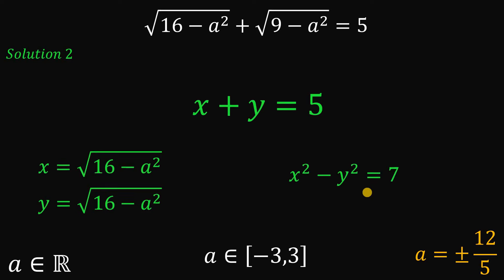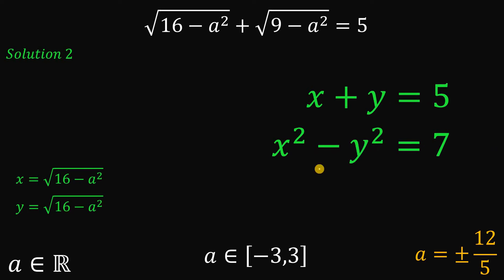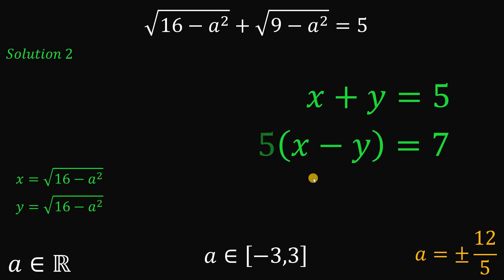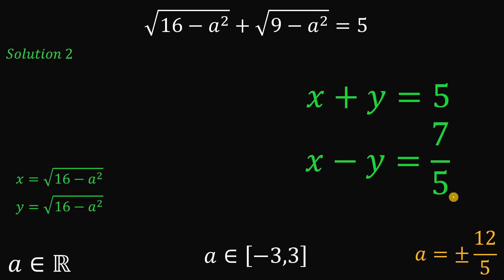Using these two equations, we can solve for the value of X. We factor X squared minus Y squared using the difference of two squares: this is X plus Y multiplied by X minus Y. Since X plus Y equals 5 from the first equation, we replace it with 5 and divide both sides by 5, getting X minus Y equals 7 over 5.